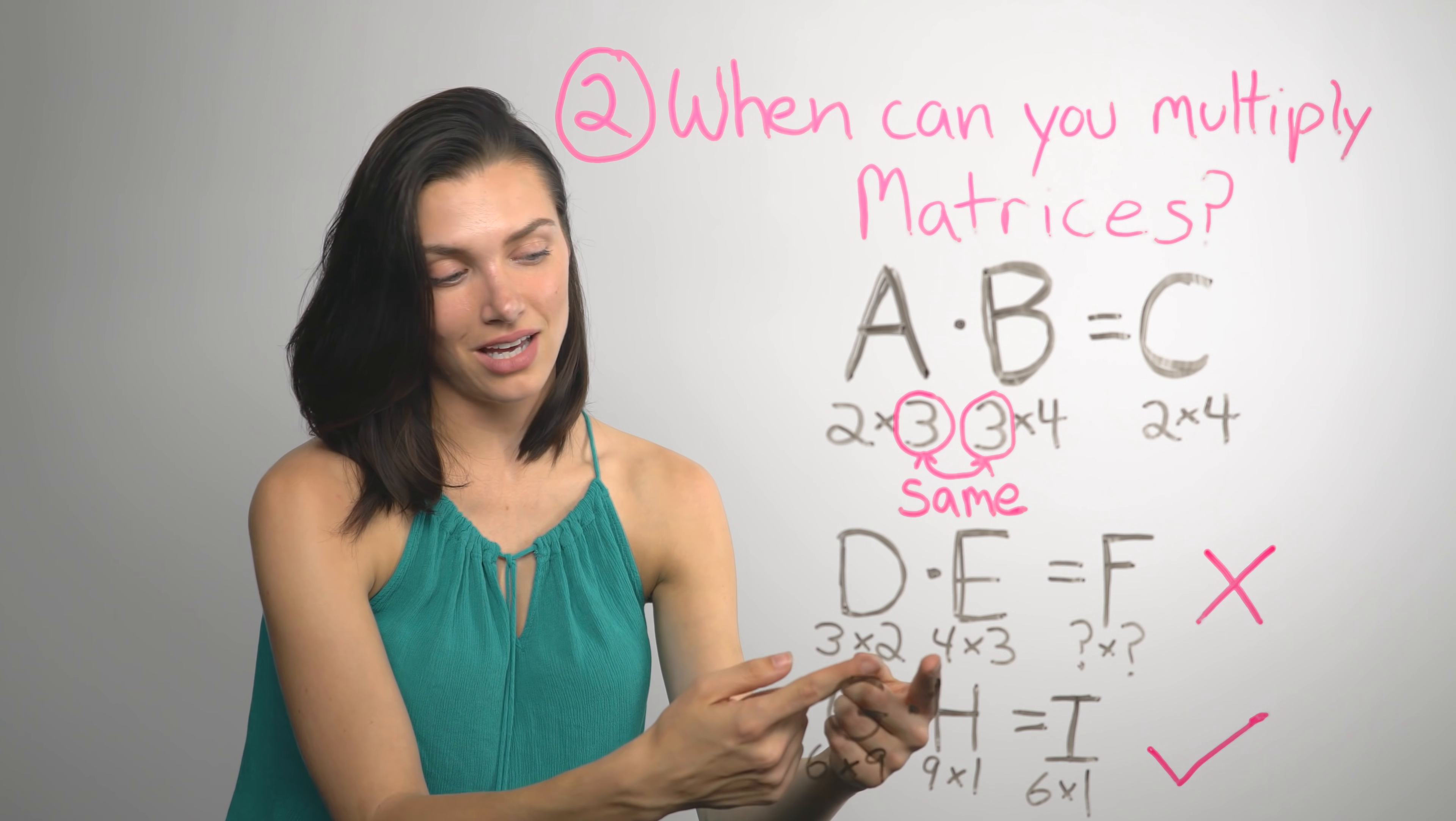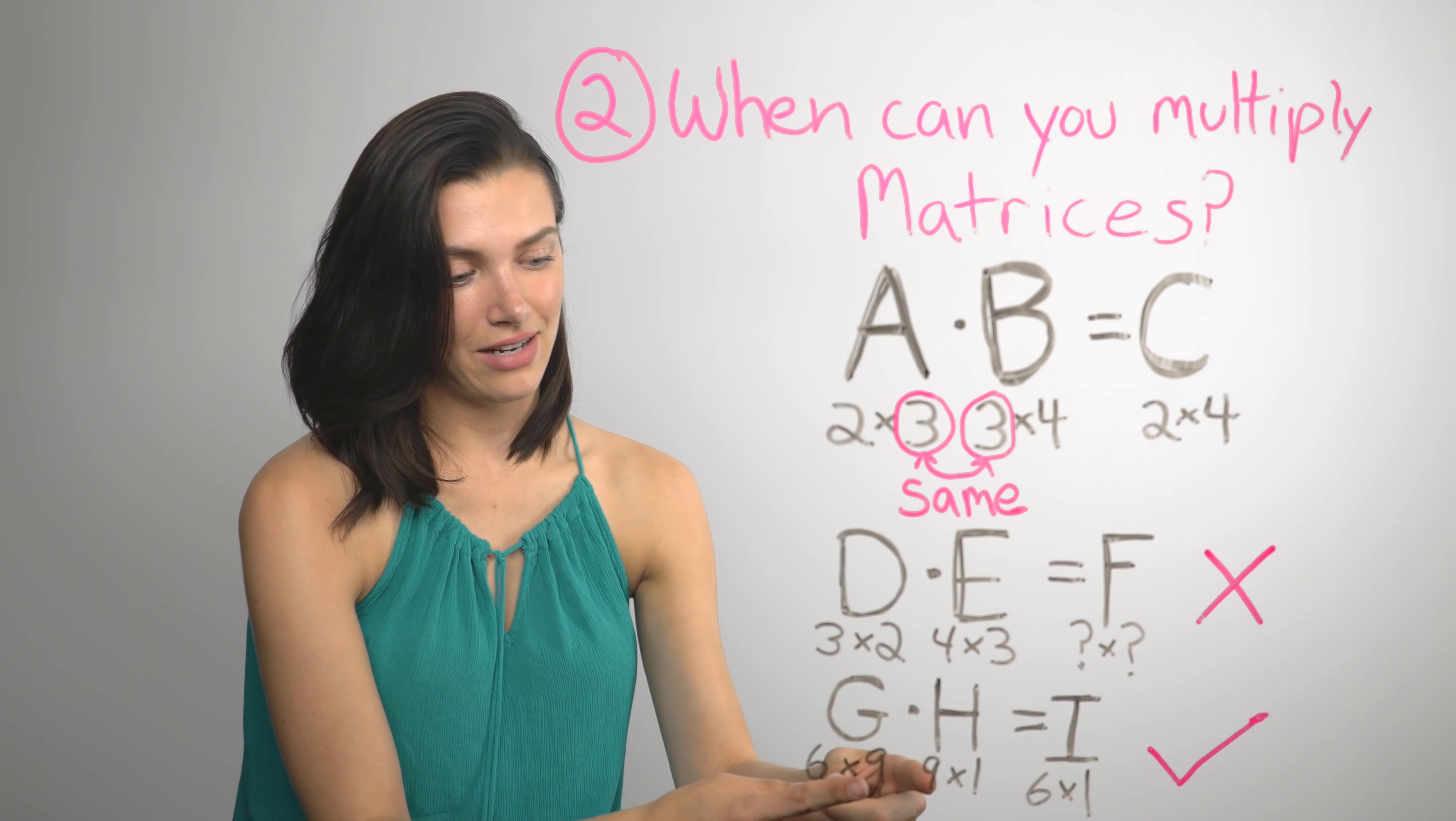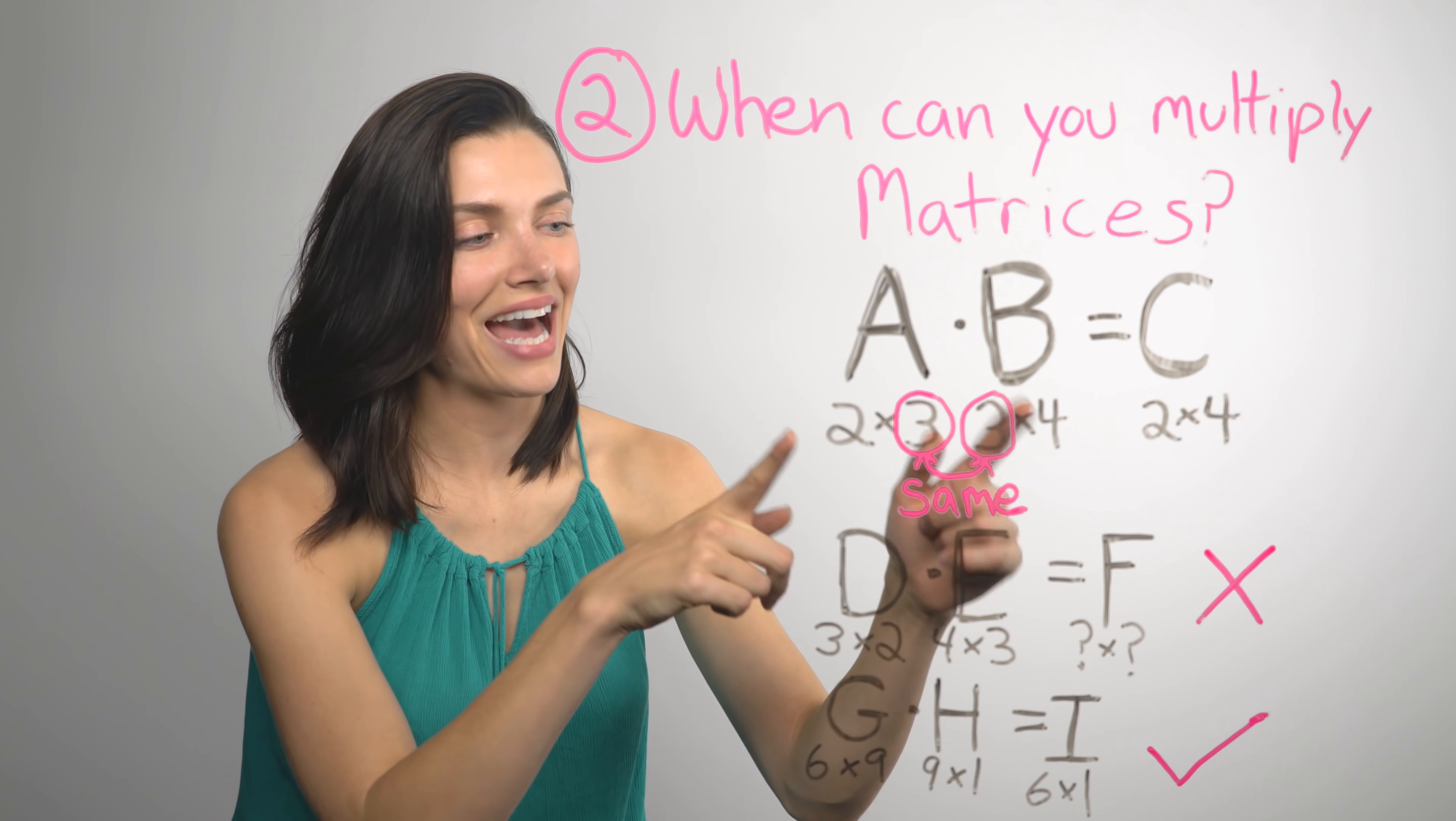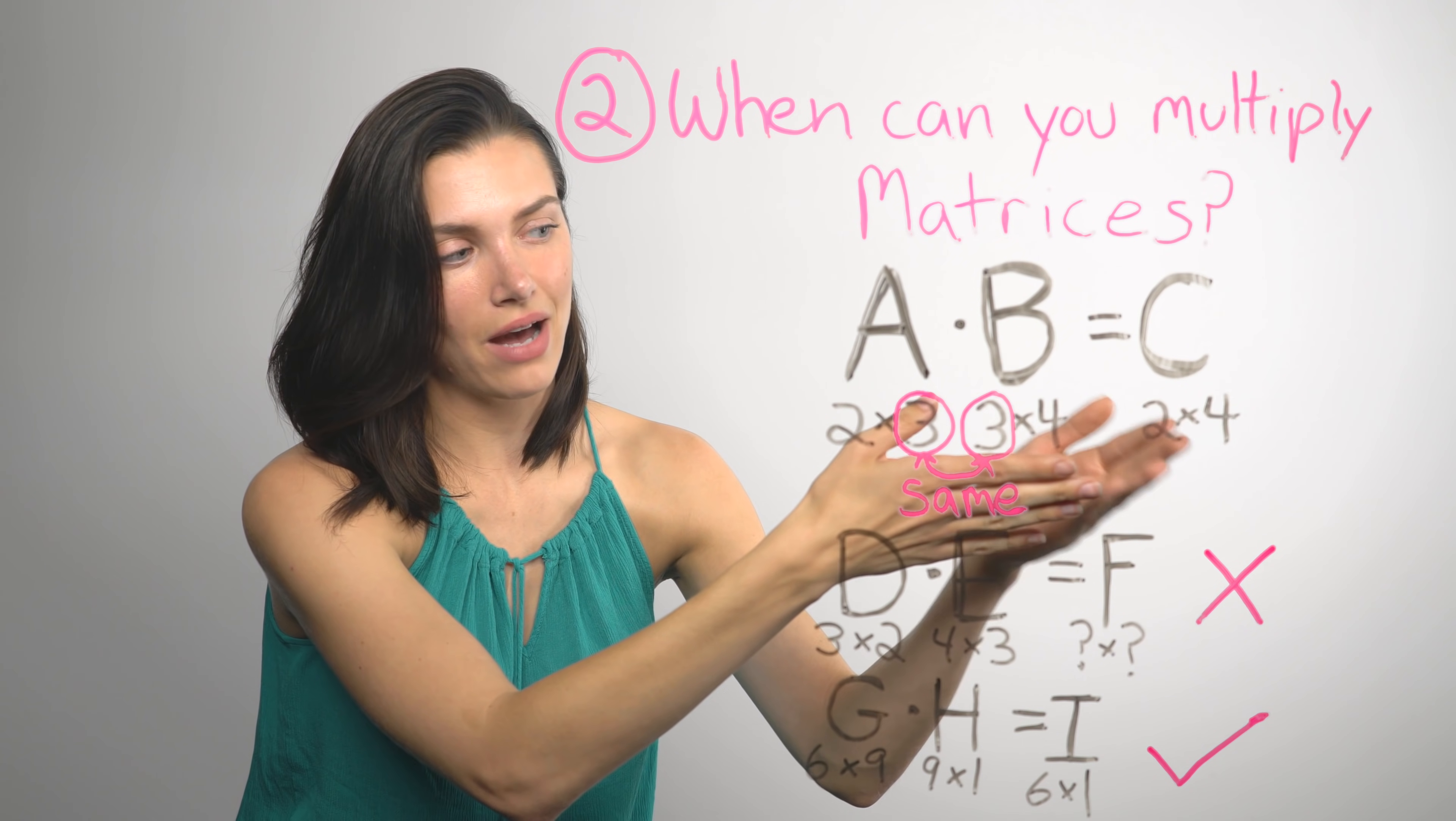So a good way to remember whether or not you can multiply two matrices is to look at the inner numbers on the matrix sizes and see that they match. Come down here, we've got the 2 and the 4. They don't match, can't multiply. Down here we've got the 9 and the 9, so you can multiply them. You can also look at the outer numbers and that will give you the size of the new matrix that you get when you're done.